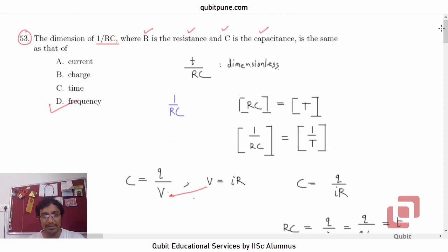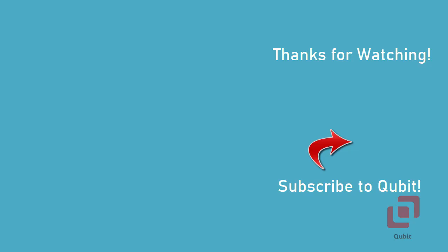That again gives us the same result that the dimension of 1 upon RC is that of 1 upon T or frequency. So 53rd option B. The 4th option B.